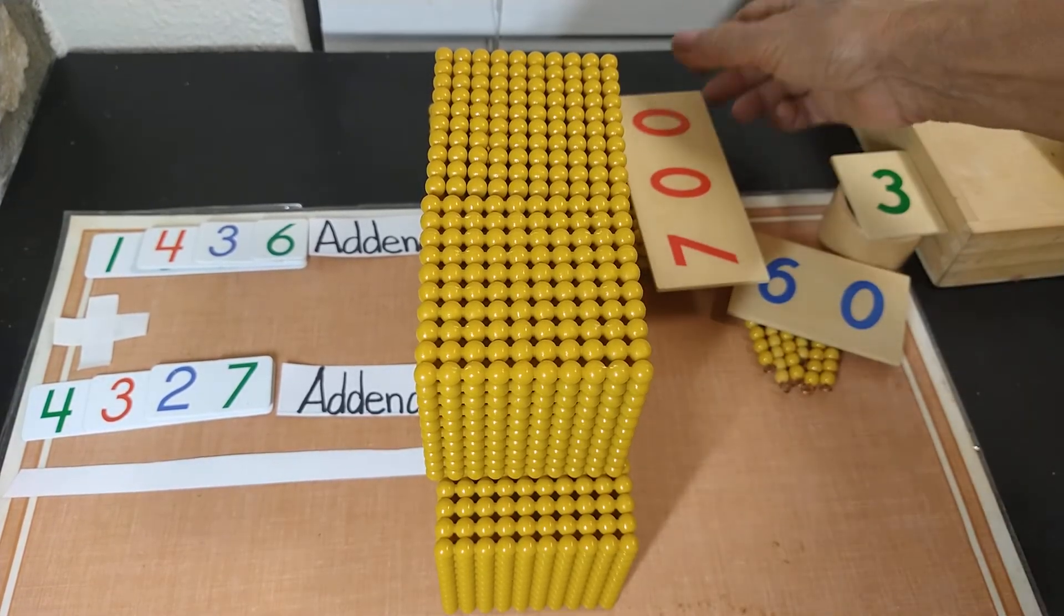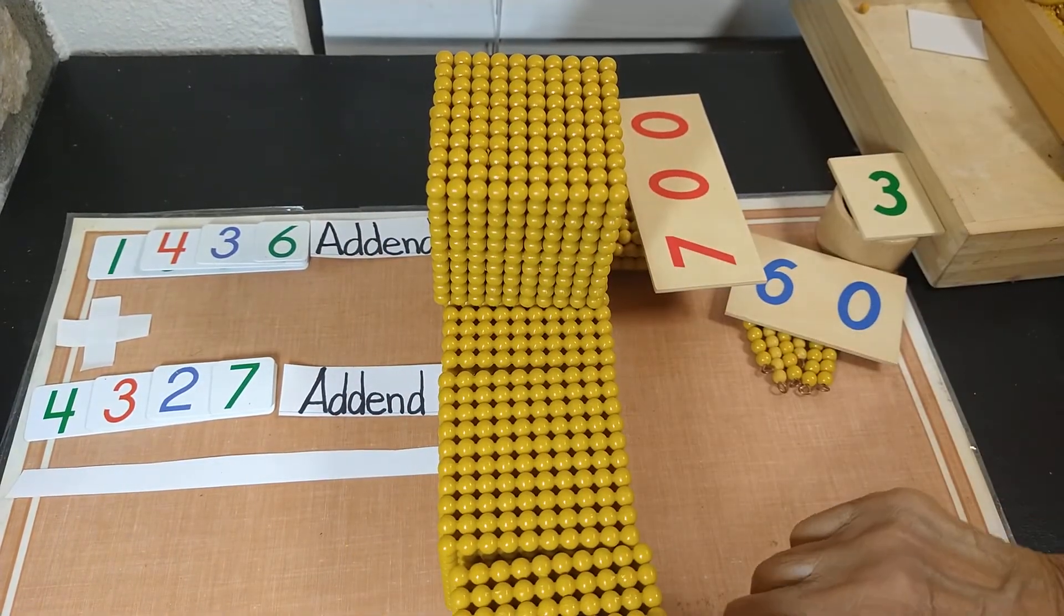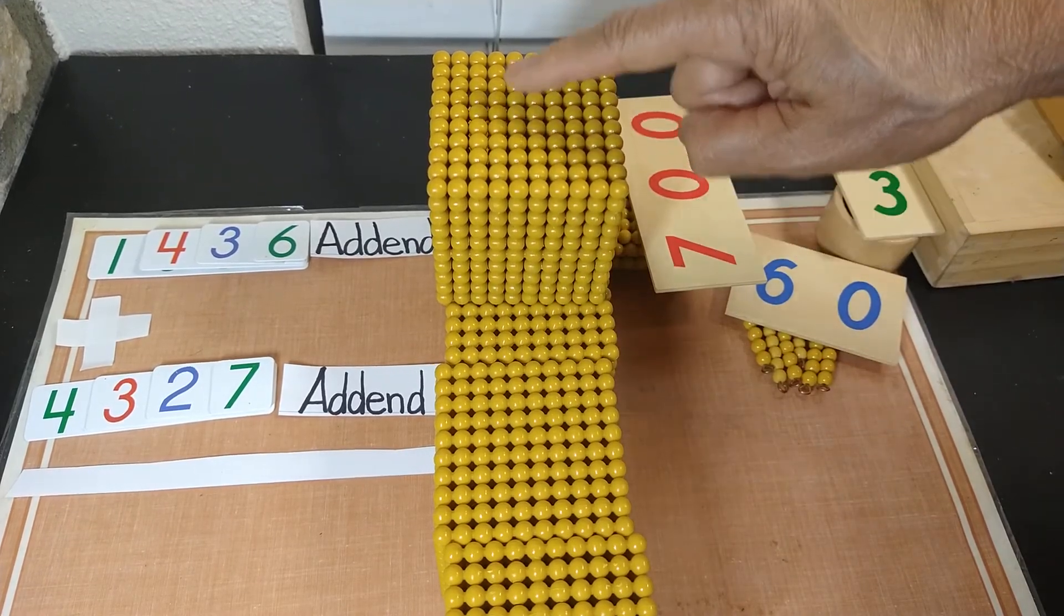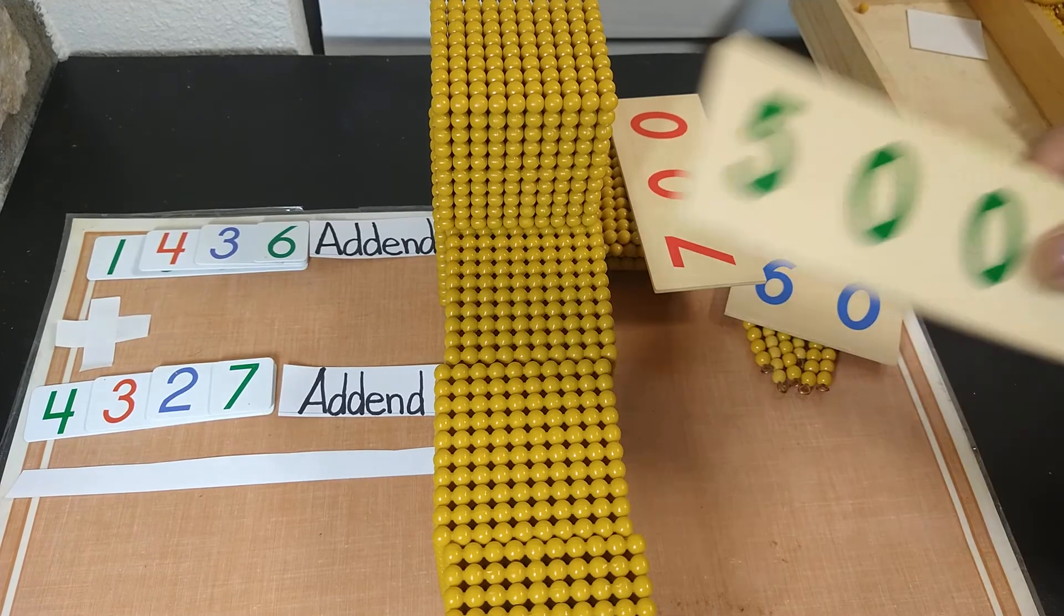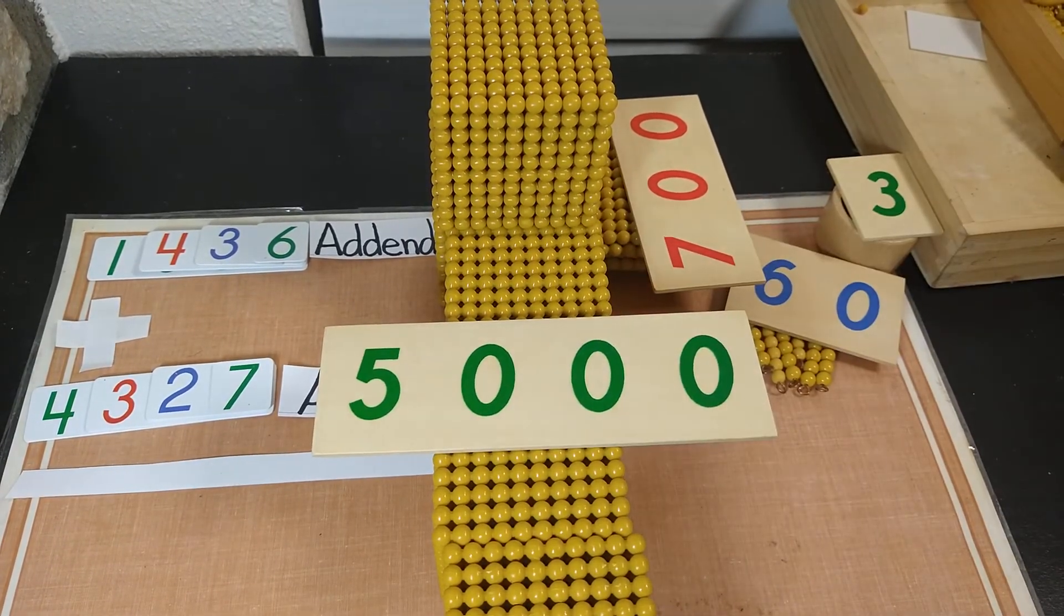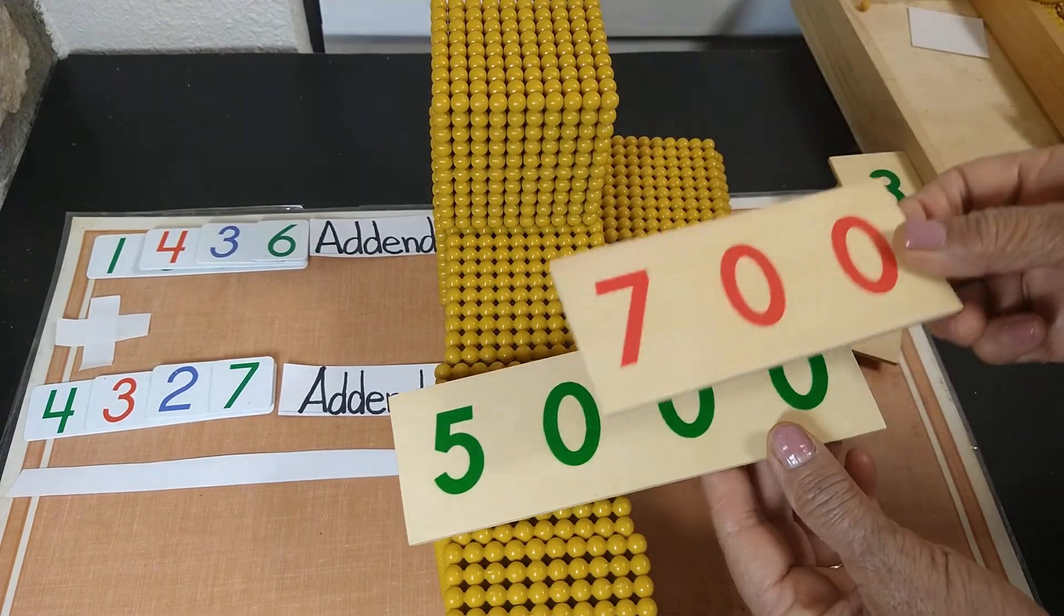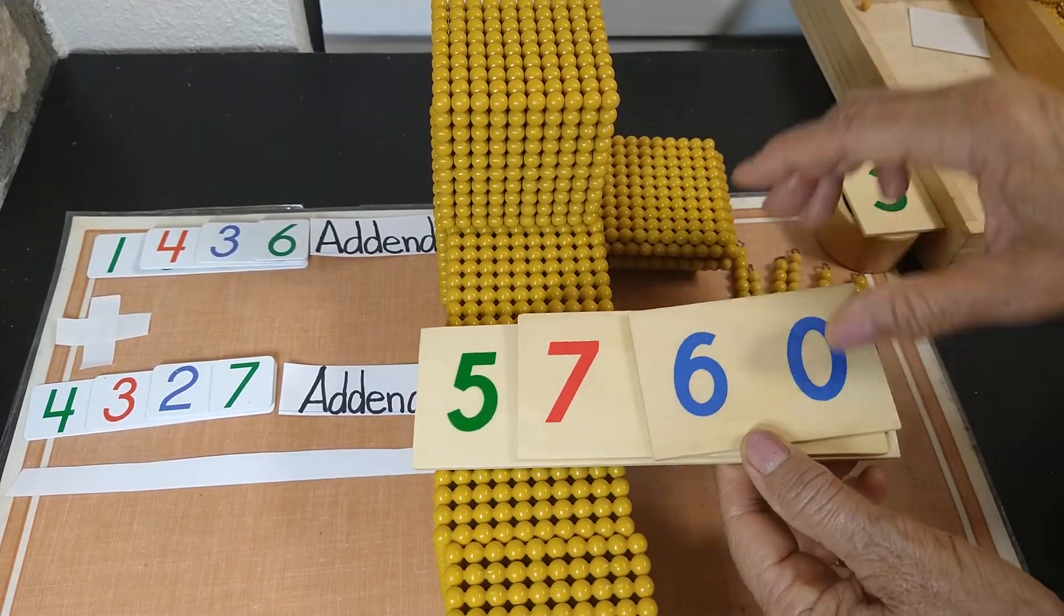So now let's count thousands. One thousand, two thousand, three thousand, four thousand and five thousand. So now we have five thousand. So after putting them together, we got five thousand seven hundred sixty-three.